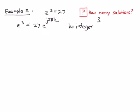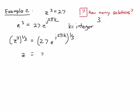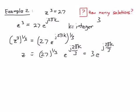Now I proceed and take the third root of both sides, raising both sides to the one-third power. So I get 27 e to the j two pi k, all to the one-third, giving e to the j two pi k over three. Well, 27 to the one-third is just three. So my final answer is z is equal to three e to the j two pi k over three, where k is an integer.